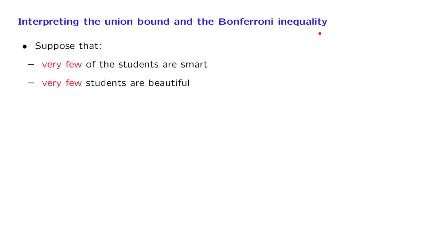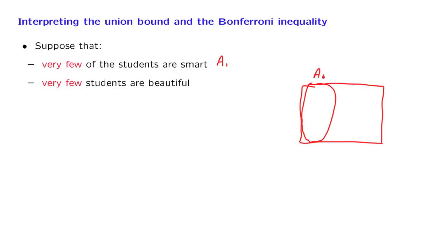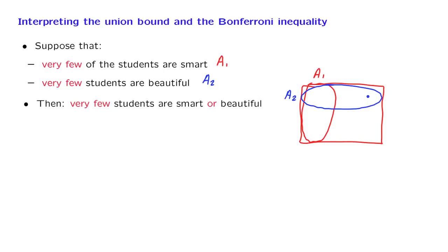Let us start with a story. Suppose that we have a number of students in some class. We have a set of students that are smart — let's call that set A1. And we have a set of students that are beautiful — let's call that set A2. If I tell you that the set of smart students is small and the set of beautiful students is small, then you can probably conclude that there are very few students that are either smart or beautiful.